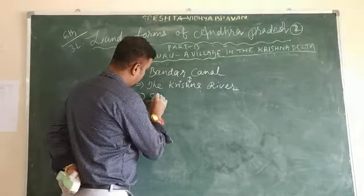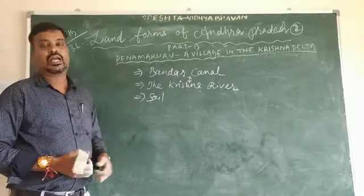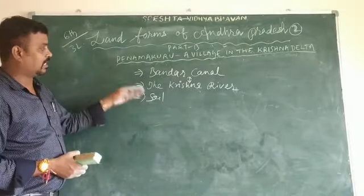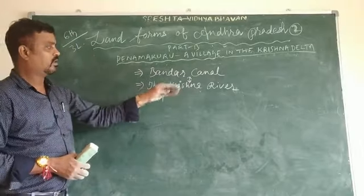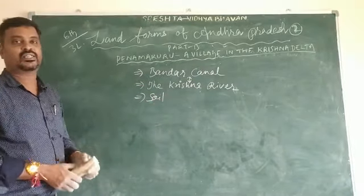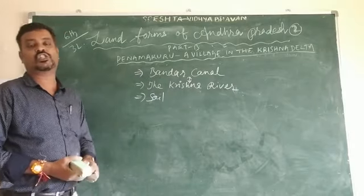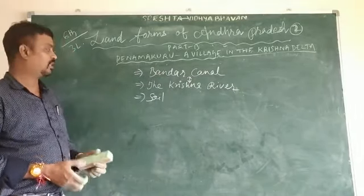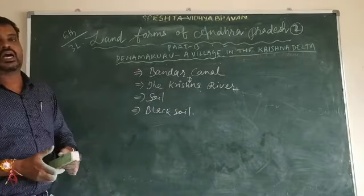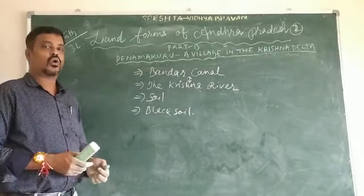Next is Soil. In Panamakuru, the soils are mostly fertile alluvial soil. This is because the Krishna river flows here, and during the rainy season, the river brings silt, sand, and mud, depositing them in the plain areas. That's why the soil here is very fertile, and it is called alluvial soil. It is also called black soil, and these soils are called 'Onru Bumi.'